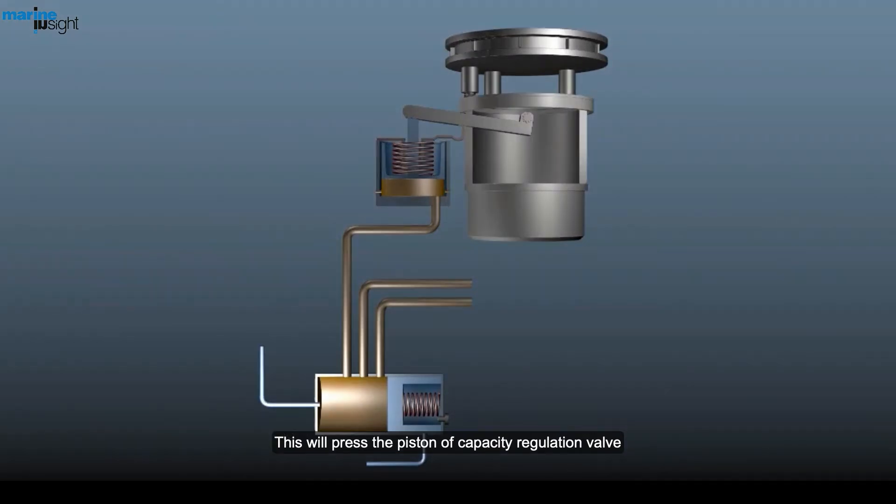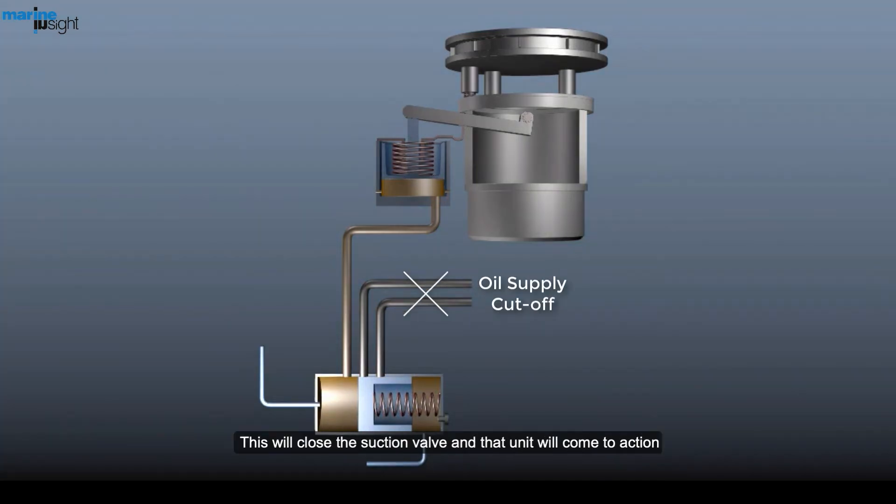This will press the piston of capacity regulation valve, cutting off oil supply and blocking the oil supply to unloader unit. This will close the suction valve and that unit will come to action.